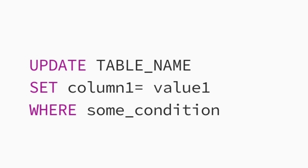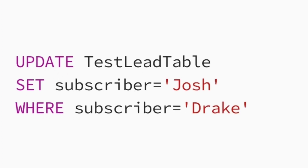You replace table name with your table. You replace column one with whatever column you want to update a value for. You replace value one with whatever value for that column. And then you replace 'some condition' with the condition that fits your needs. For our example: update test lead table set subscriber equal to Josh where subscriber equals Drake. Now the row or rows that had a value of Drake for the column subscriber will now have a value of Josh.